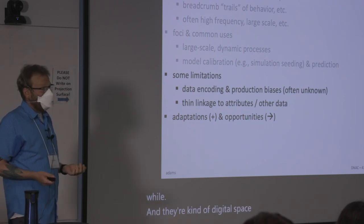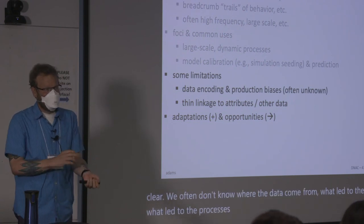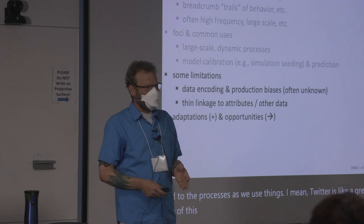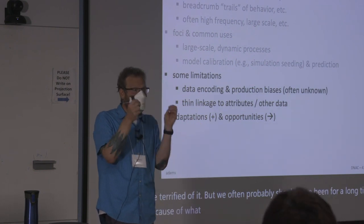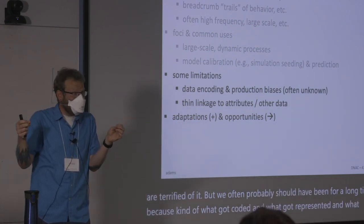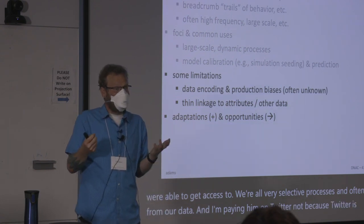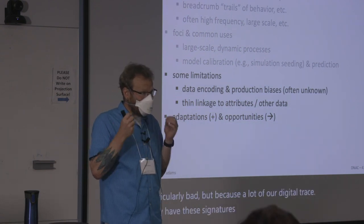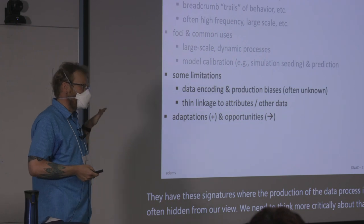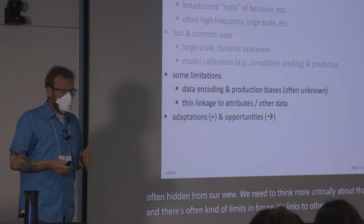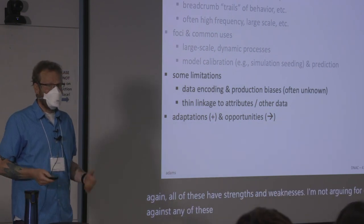In digital trace data it's become clear that we often don't know where the data come from or what led to the processes. Twitter is a great example — we used to use it for a lot of things and now people are terrified of it, but we probably should have been cautious for a long time, because what got coded, what got represented, and what we were able to access were all very selective processes often hidden from our view. A lot of our digital trace data have these signatures where the production process is hidden and we need to think more critically about that.